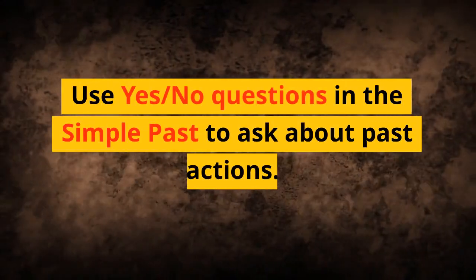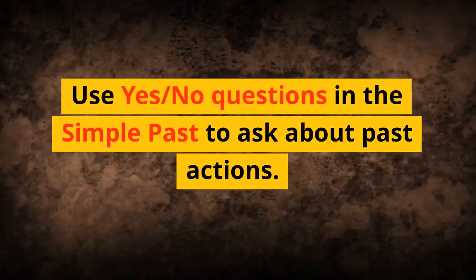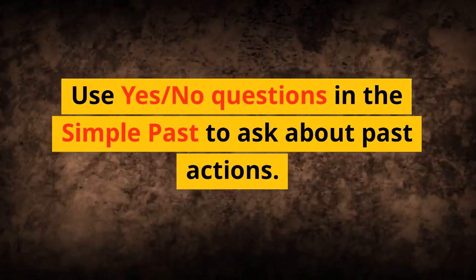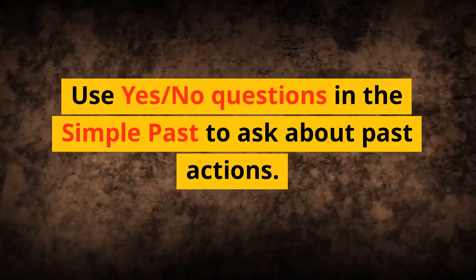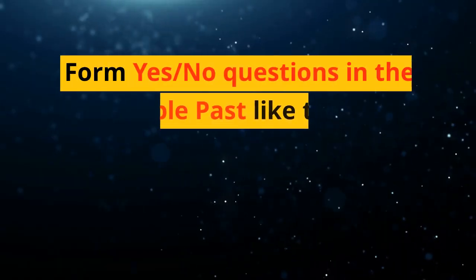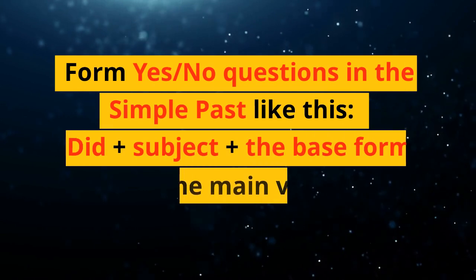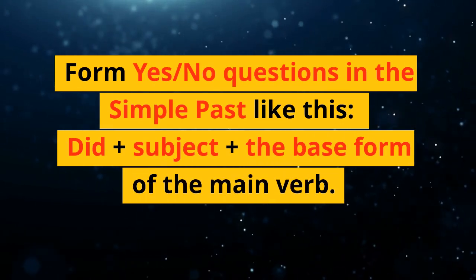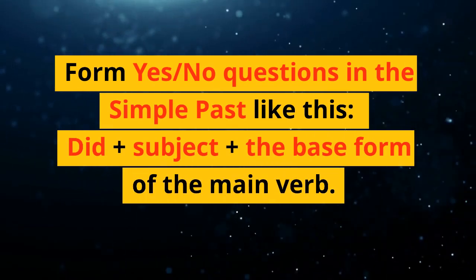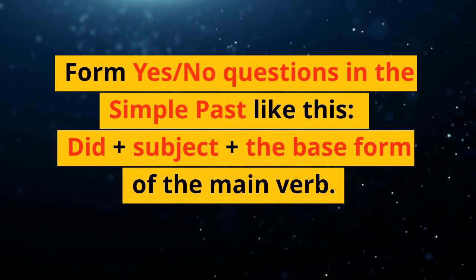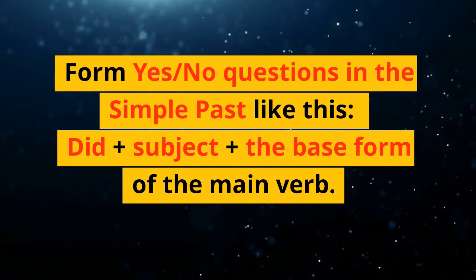Use yes-no questions in the simple past to ask about past actions. Form yes-no questions in the simple past like this: did, plus subject, plus the base form of the main verb.